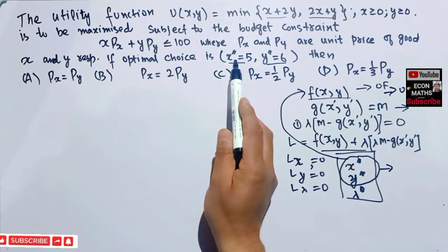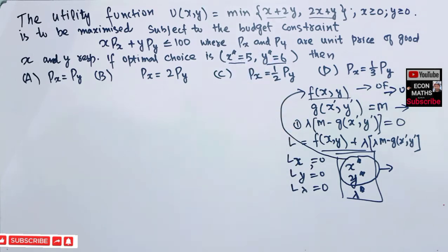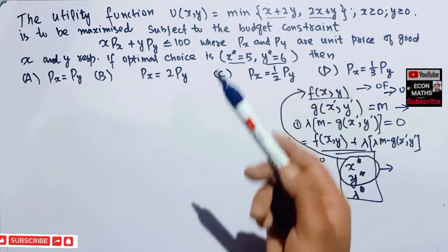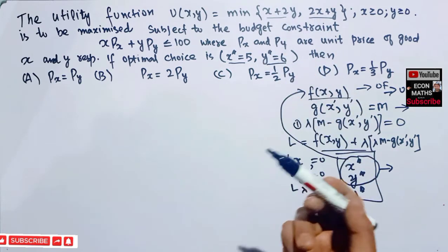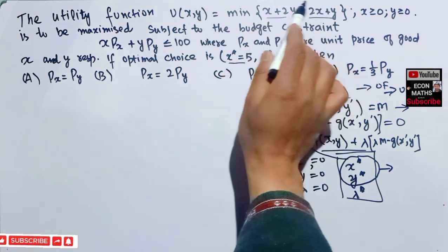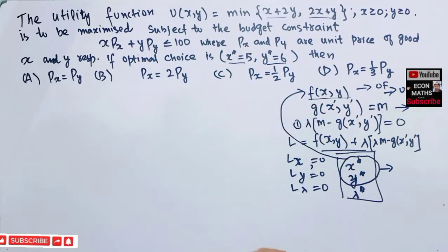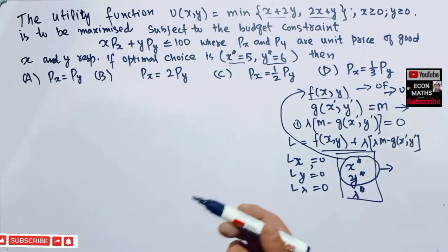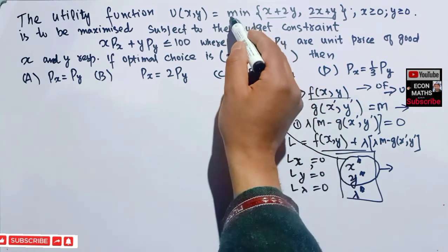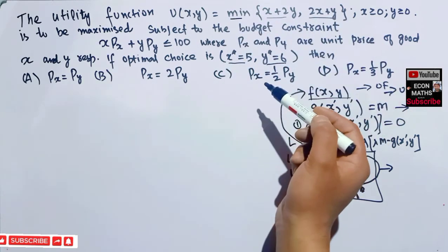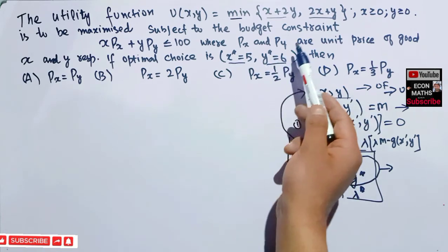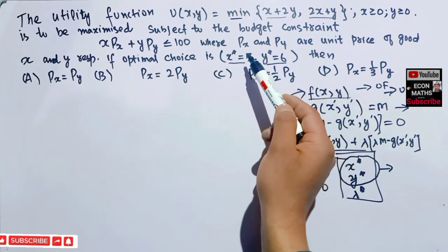We are given the optimal values x* = 5 and y* = 6. First, we will see which of these expressions we need to maximize by plugging the optimal values into the objective function to find the minimum of the two expressions.